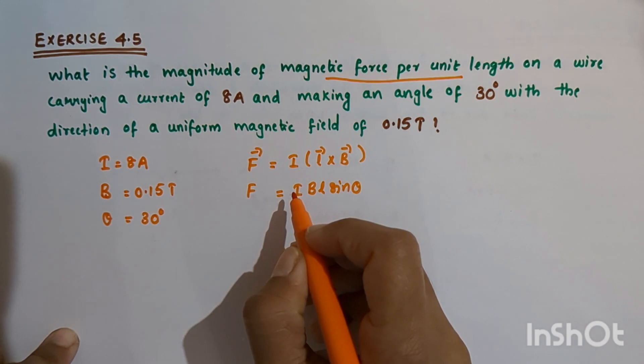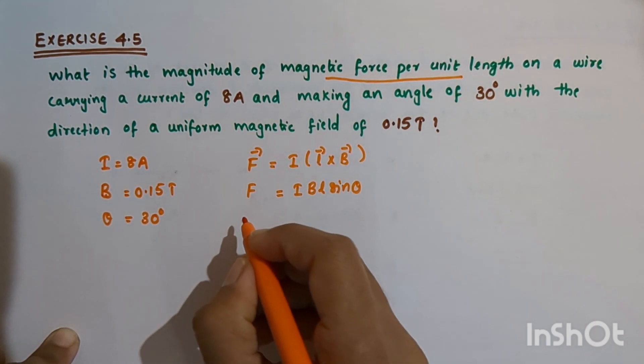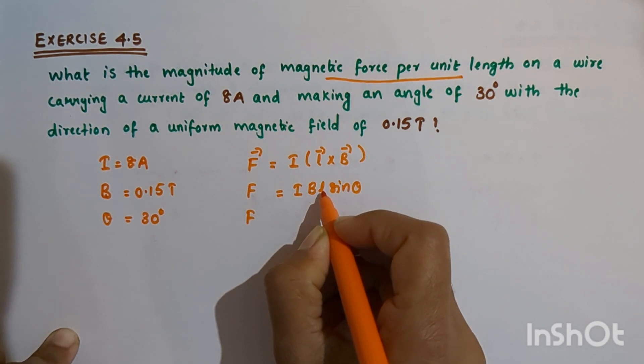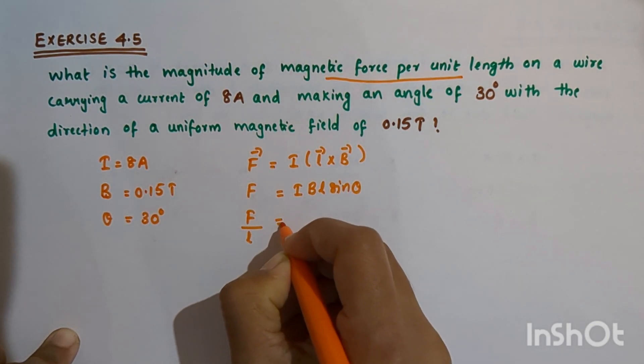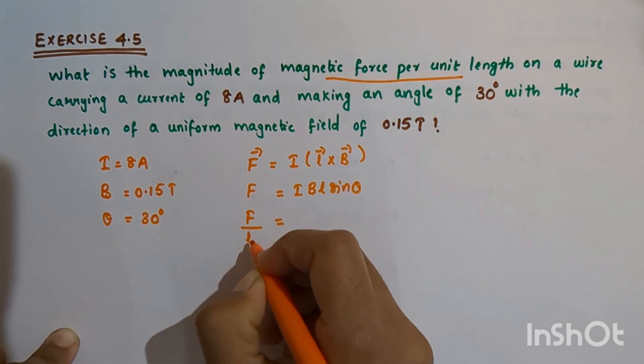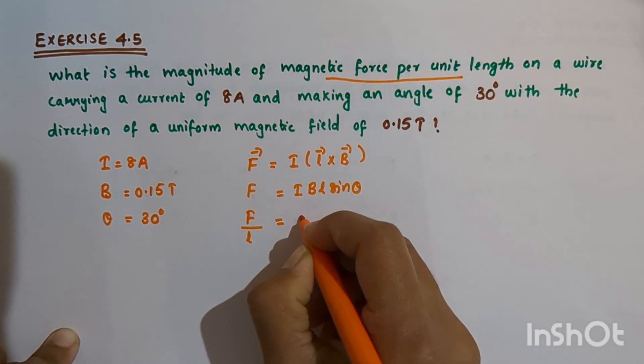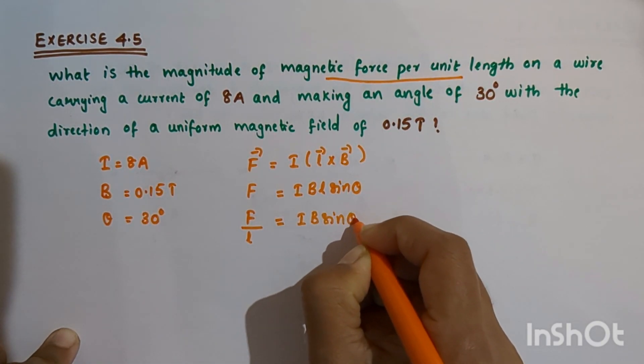We want magnetic force per unit length, so we take L to the denominator. Force per unit length equals I times B times sin theta.